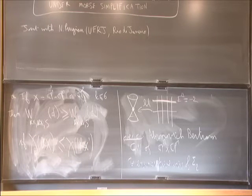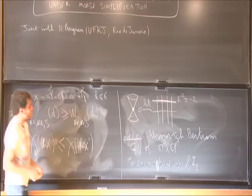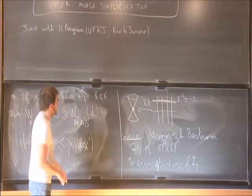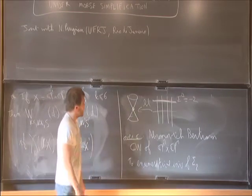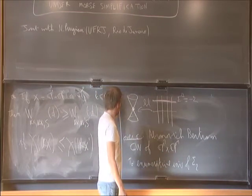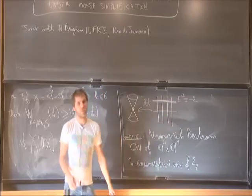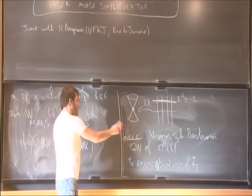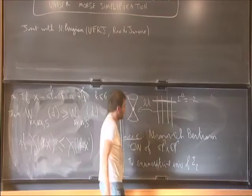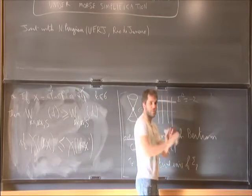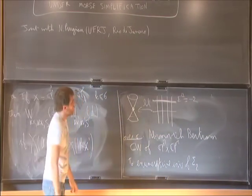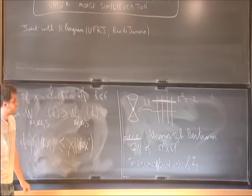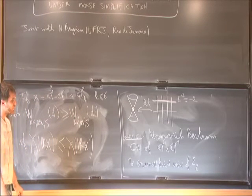Now maybe I will go to a sketch of the proof. The starting point is this formula in complex geometry: you take P1 cross P1 and degenerate it to σ2. This is something standard which goes back to Kodaira at least. And now what you try to understand is what happened to the curves you are counting during this degeneration — at the limit, how do they behave?